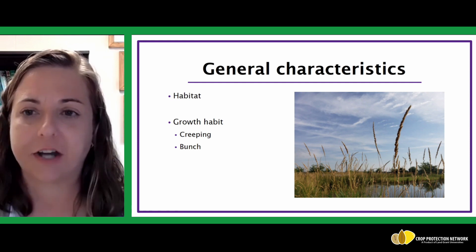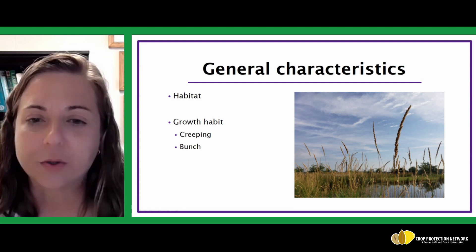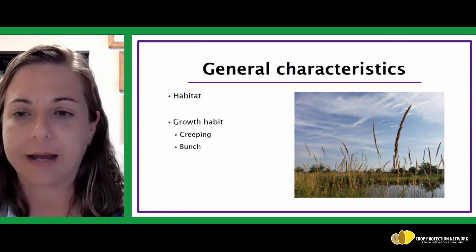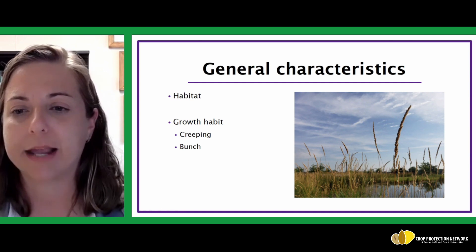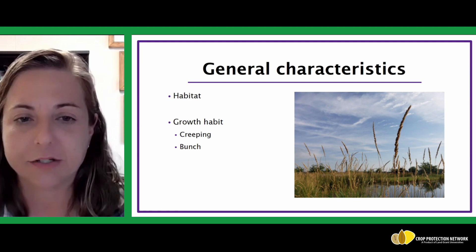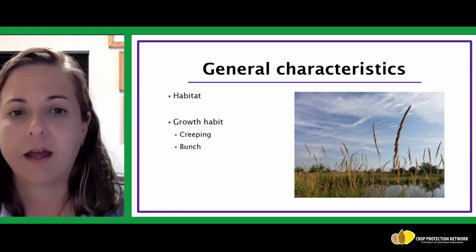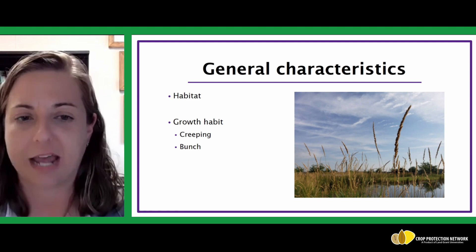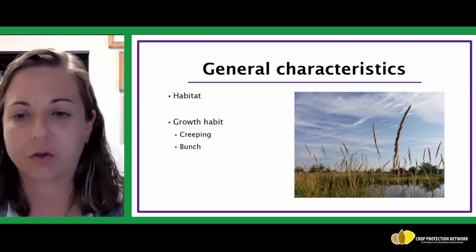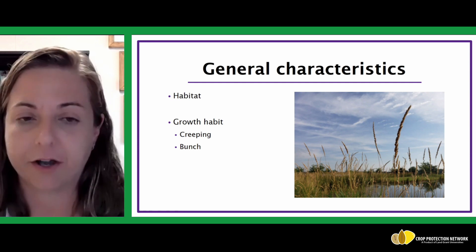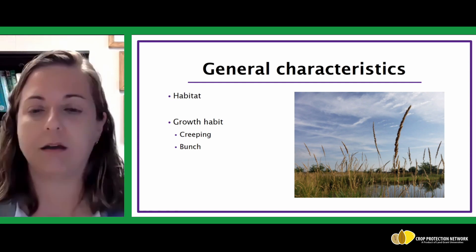Another general characteristic of the grass plant to consider would be the growth habit. There are two main types of growth habits to think about when identifying grasses. The first would be creeping — these are grasses that have some mechanism to spread across the surface of the ground, often having runners, stolons, rhizomes, or adventitious roots. The other type is a bunch growth habit, where plants have a compact, contained crown and, if perennial, will regrow from that particular bunch every year.